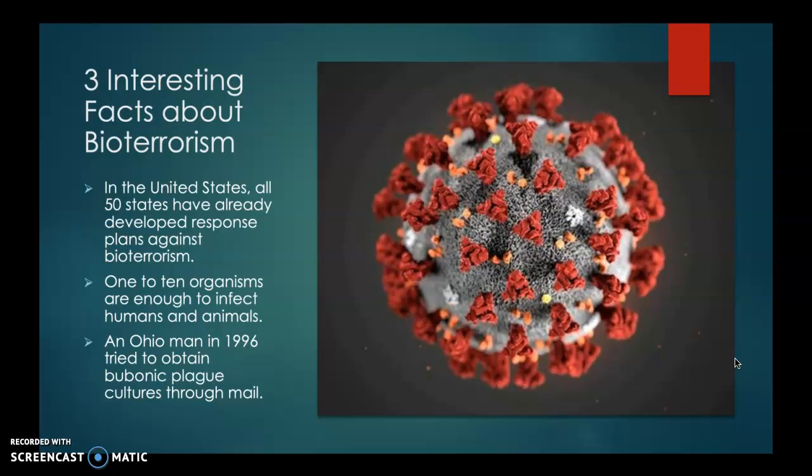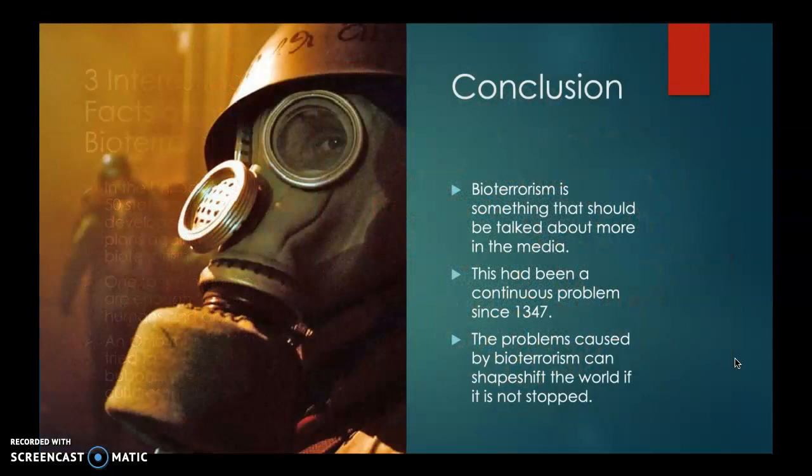Three interesting facts about biotourism: In the United States, all 50 states have already developed response plans against biotourism, which again, response plans should be improved quite a bit more in order to really start to see a decline in biotourism attacks. One in ten organisms are enough to infect humans and animals. An Ohio man in 1996 tried to obtain bubonic plague cultures through mail.